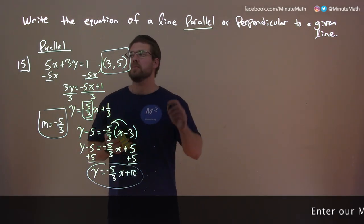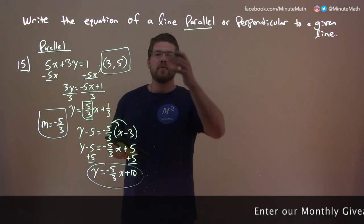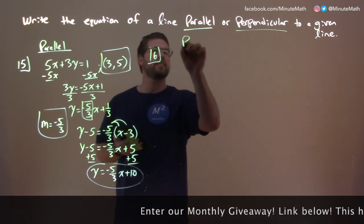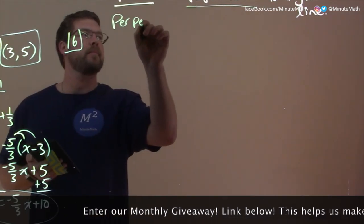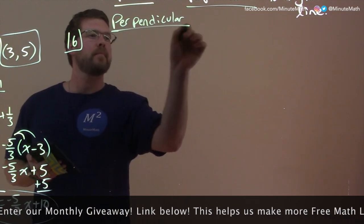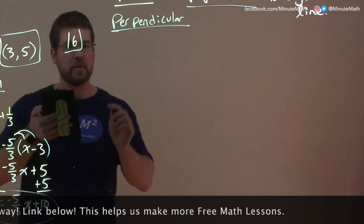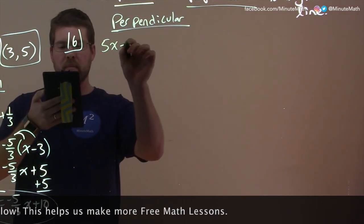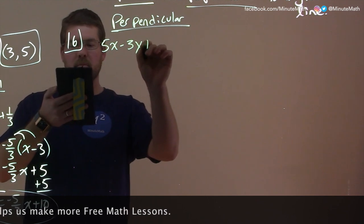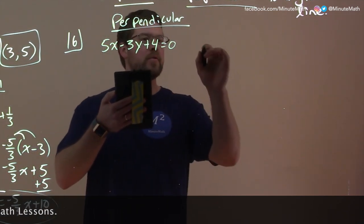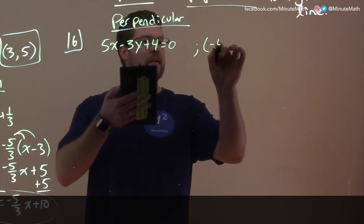So now let's go, we did parallel, let's do perpendicular. So now we're going to do perpendicular. So we're going to find the equation line perpendicular to 5x minus 3y plus 4 equals 0. And it goes to the point negative 4 comma 1.